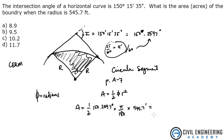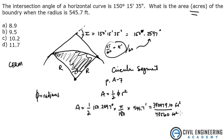What does that give me? I get 390,479.10, and that is in feet squared. The answer, though, wants acres. So to get acres, we divide by 43,560 — that's how many square feet are in one acre. That gives me an answer of 8.964 acres.